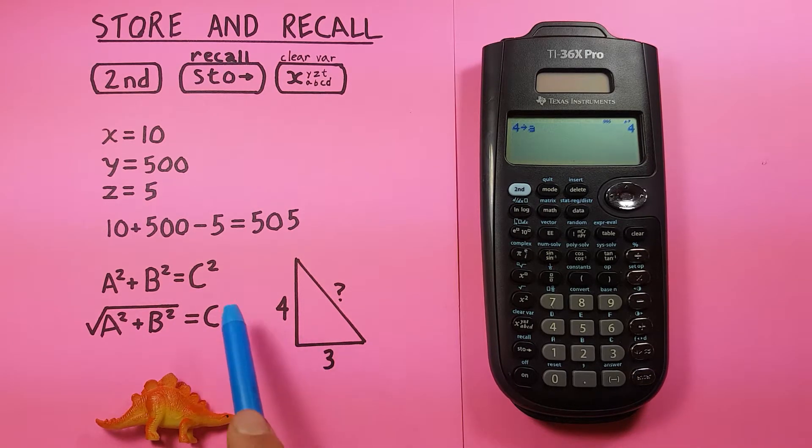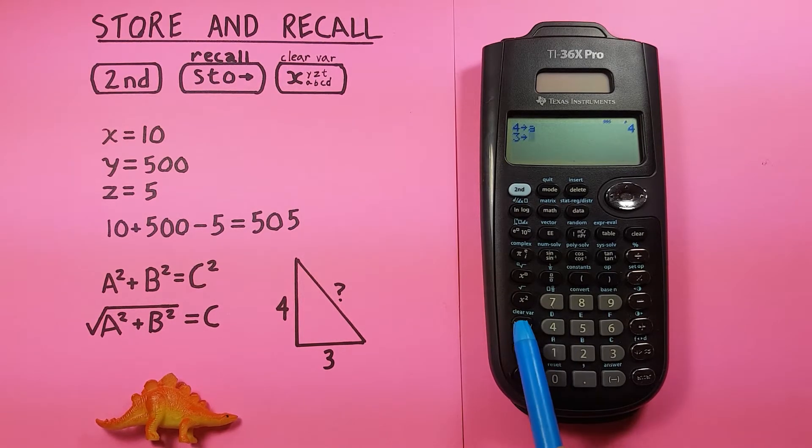And 3 into b, 3, store, cycle through to b, there we go, enter.